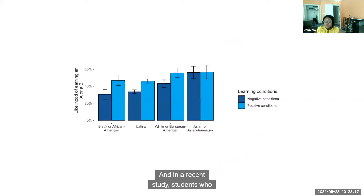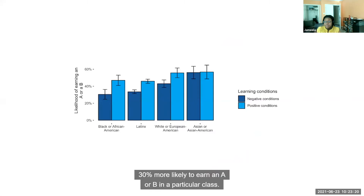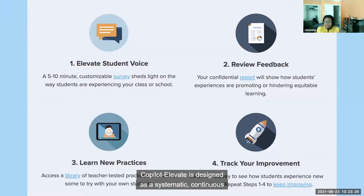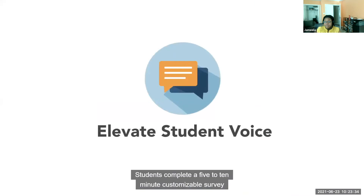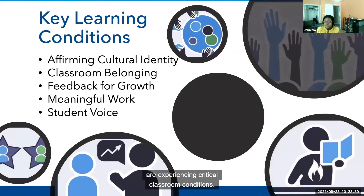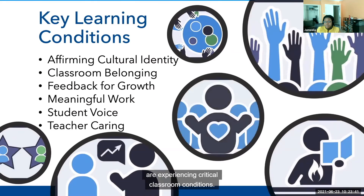Over 90% of teachers who have used Co-Pilot have successfully improved how their students experience their classroom along one or more learning conditions. And in a recent study, students who experience positive conditions were 30% more likely to earn an A or a B in a particular class, and that effect was even bigger for students of color. Co-Pilot Elevate is designed as a systematic, continuous improvement process. Students complete a 5–10 minute customizable survey that sheds light on the way students are experiencing critical classroom conditions.